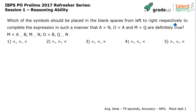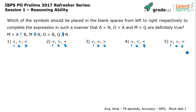Next question: which symbols should be placed in the blank spaces from left to right respectively to complete the expression so that 'a greater than n,' 'o greater than a,' and 'm greater than q' are definitely true? There are three blanks — one, two, and three — and the options give symbols for those three positions in the same order. We need to fill the blanks such that all three conditions are definitely true. The easiest way is to try options one by one and check which satisfies all three.